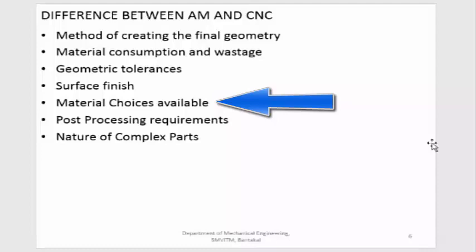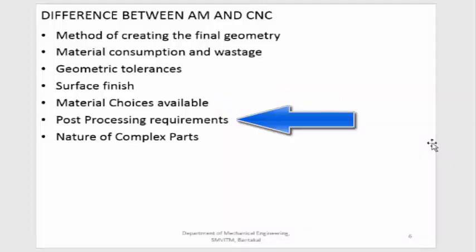The next difference is material choices. CNC machining can be used for virtually any material — very hard or very soft, metal, ceramic, or plastic — everything can be machined. But in additive manufacturing there is a large limitation on the materials that can be used. Some materials are not possible at all. It is mostly used for plastic materials and some metals that can be used in powder form and melted by lasers to create a solid component.